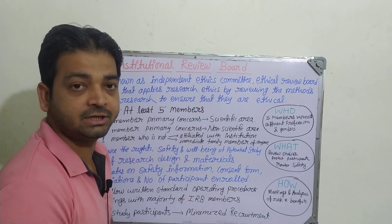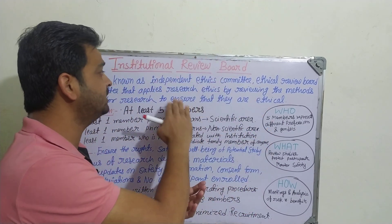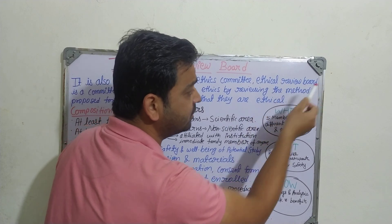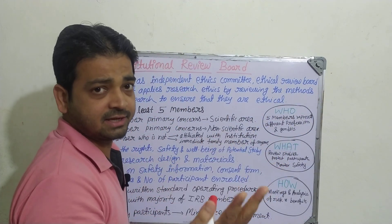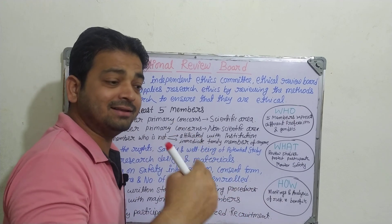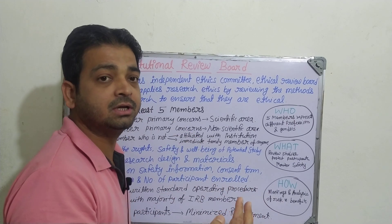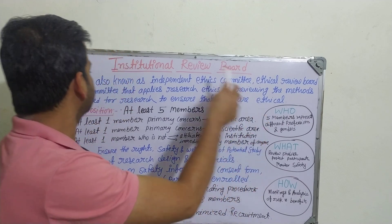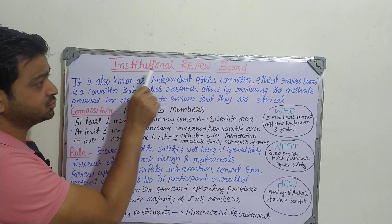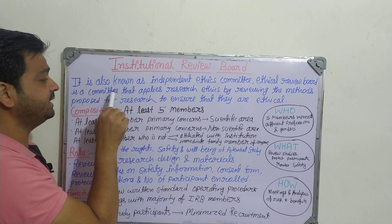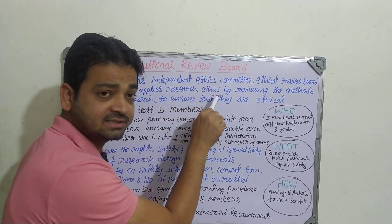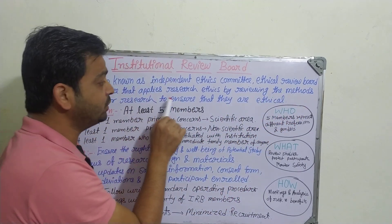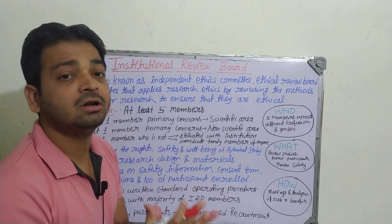Both the institutional review board and independent ethics committee are mentioned in your syllabus, and both are the same. It is also known as the ethical review board. The ethical here means reviewing whatever things are ethical or not during the clinical trial study and protocol design. The institutional review board is a committee that applies research ethics by reviewing the methods proposed for research to ensure that they are ethical.